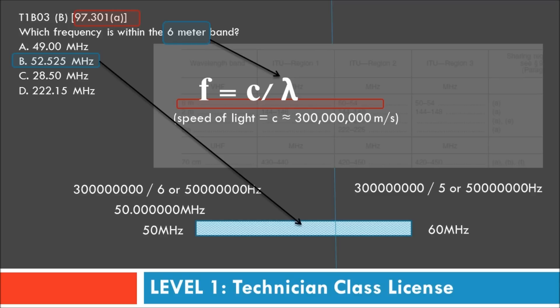You can either go back to the chart and remember the frequencies per band, or remember the formula and calculate as needed — your choice.